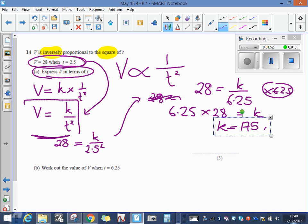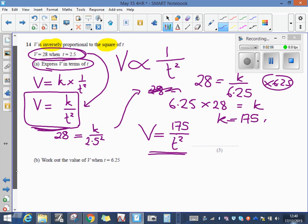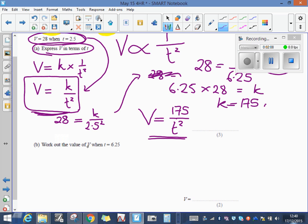Now don't write the answer k equals 175. You go back to this stage here. Instead of k now I can write 175, so V equals 175 over t squared, and that's the answer to part a.